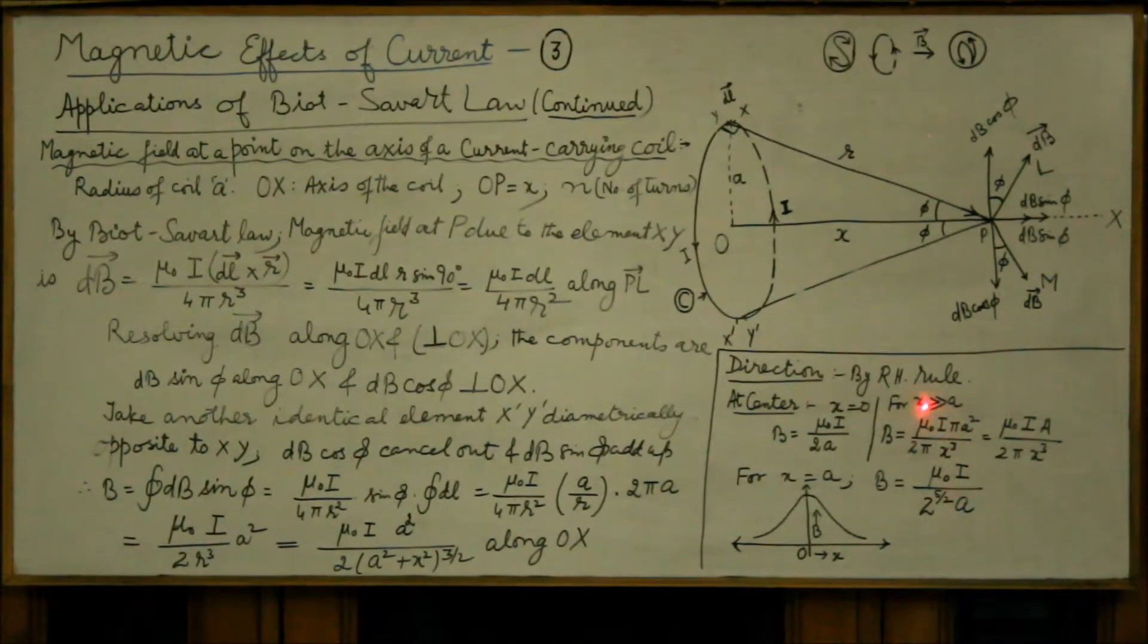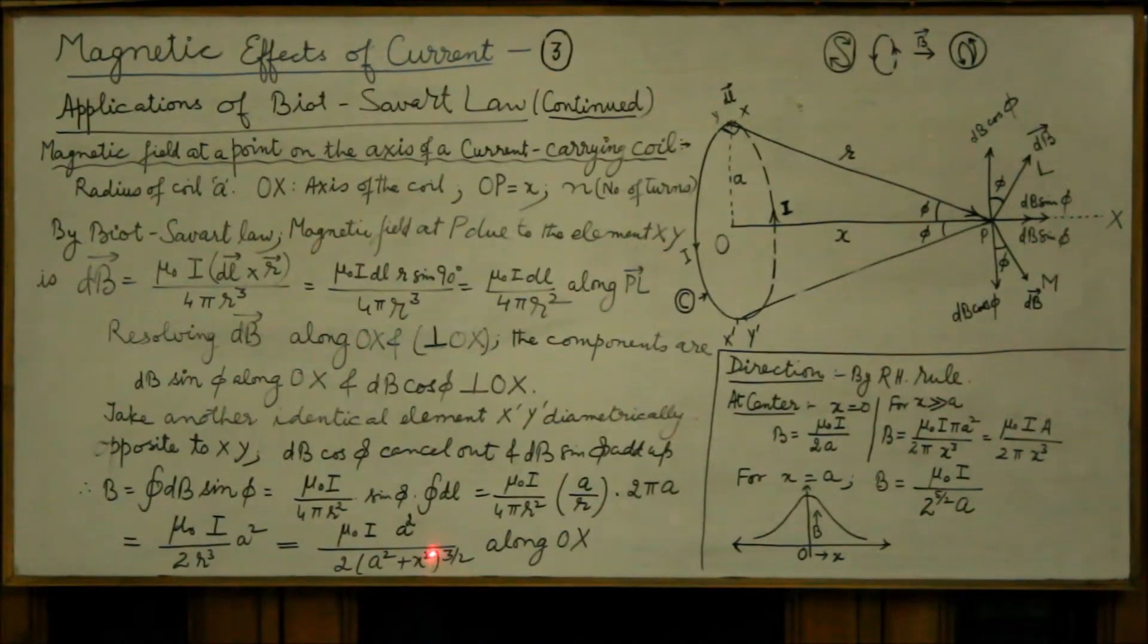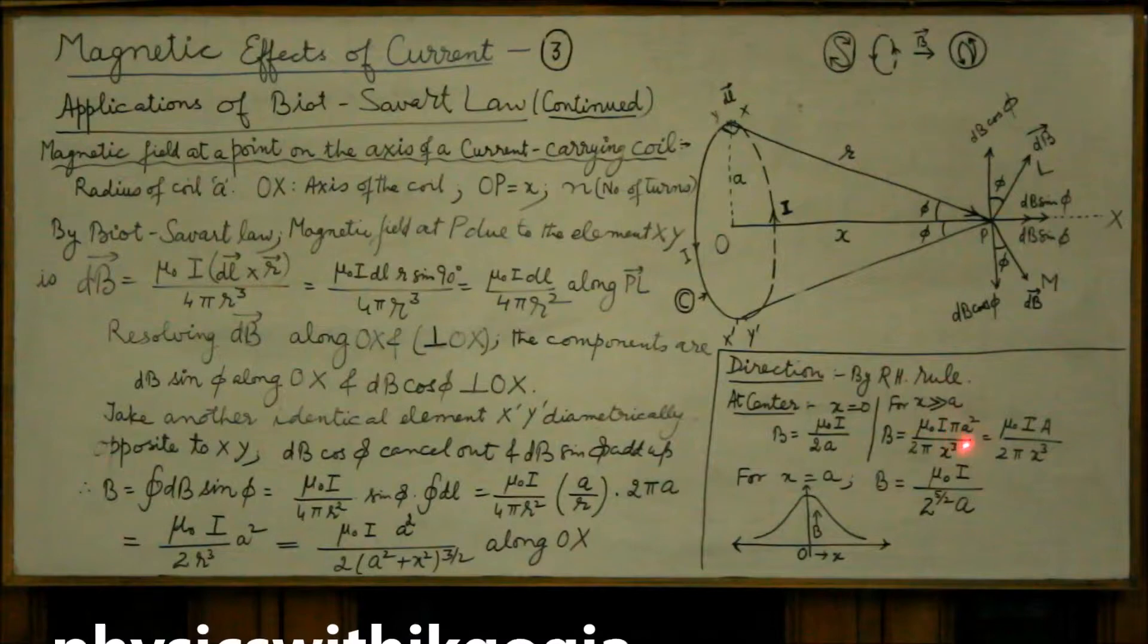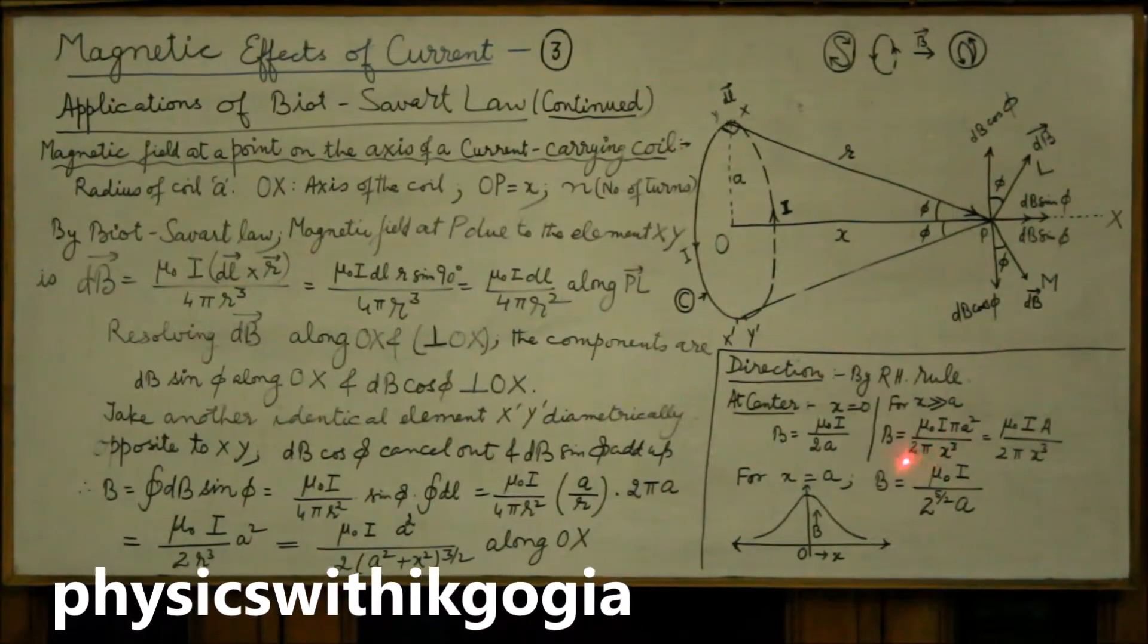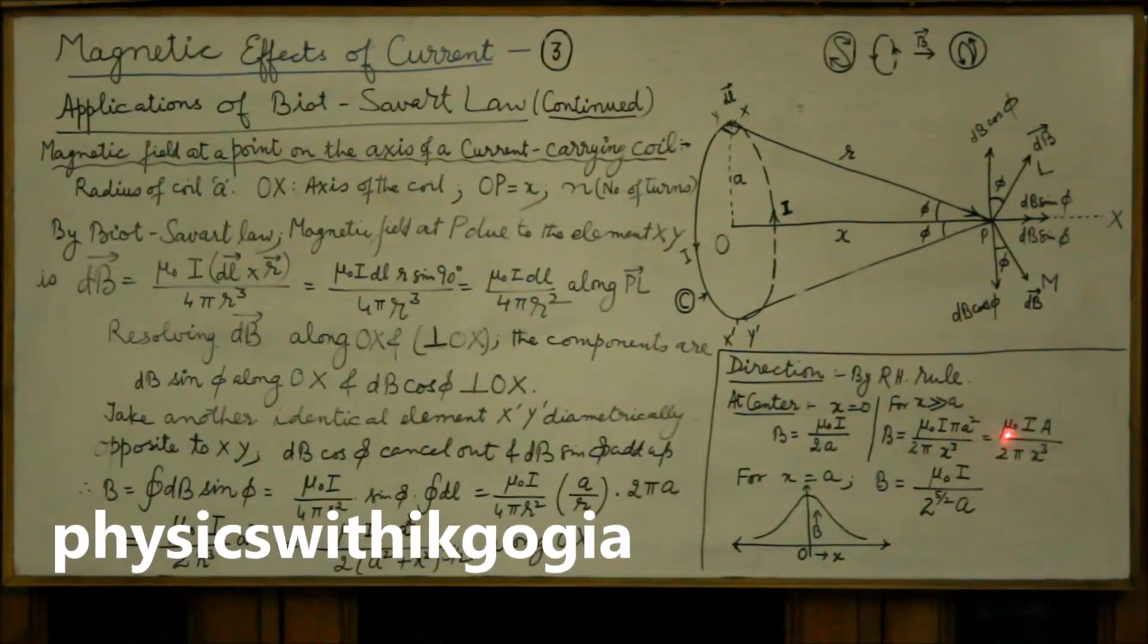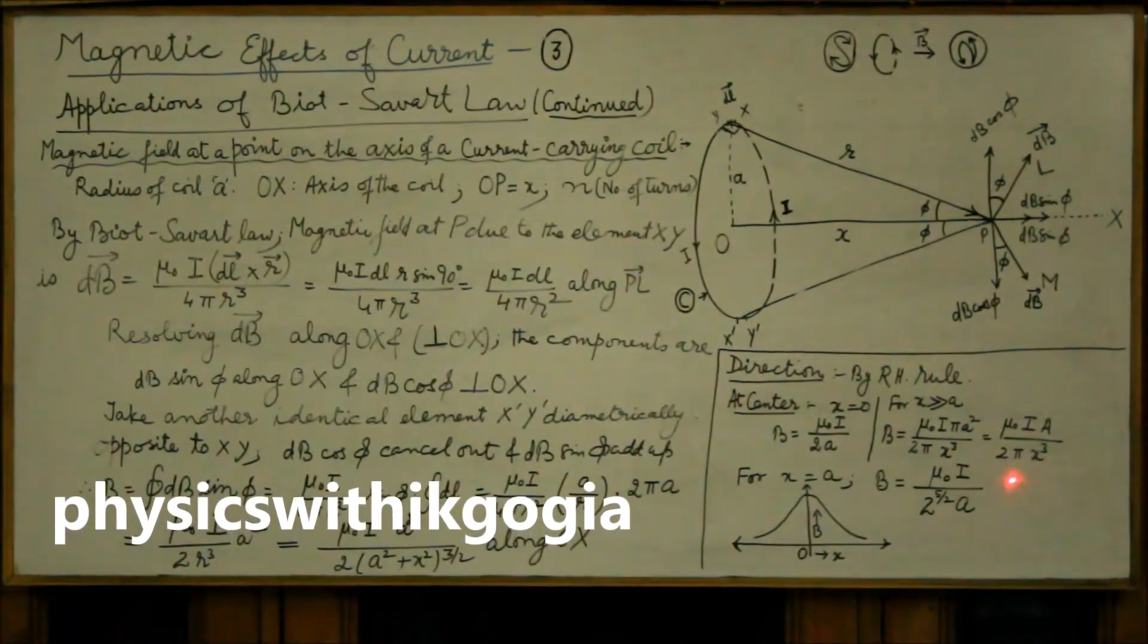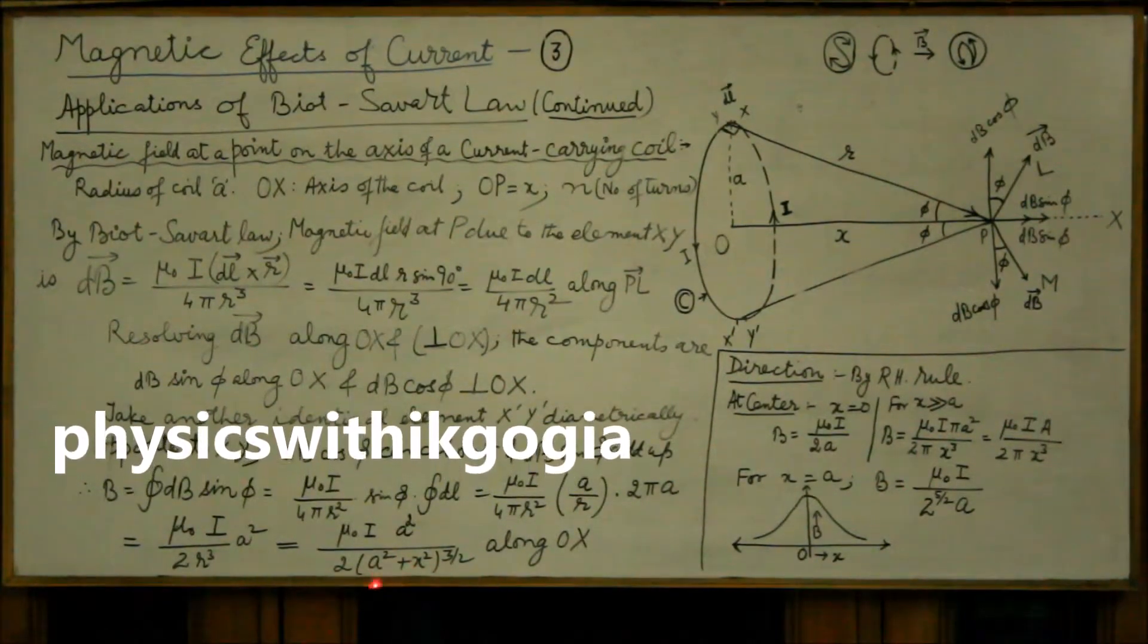Similarly if x is very large as compared to a, we can rewrite this relation as μ₀ i multiply and divide by π: πa² over 2π x³. πa² is area of the coil so μ₀ i A over 2π x³ because in the denominator we neglect a.